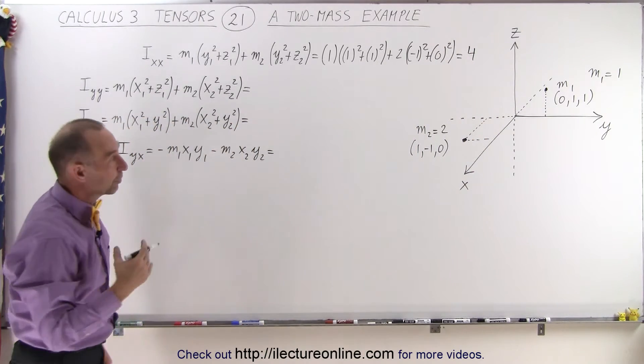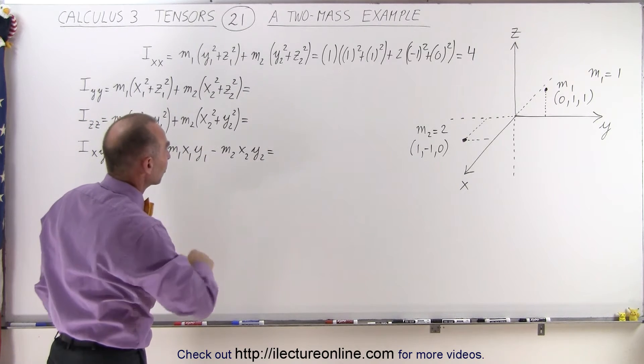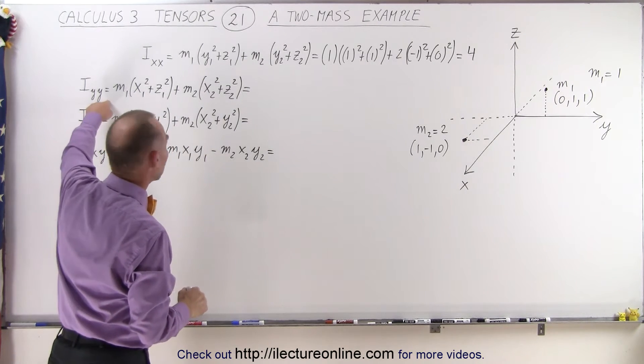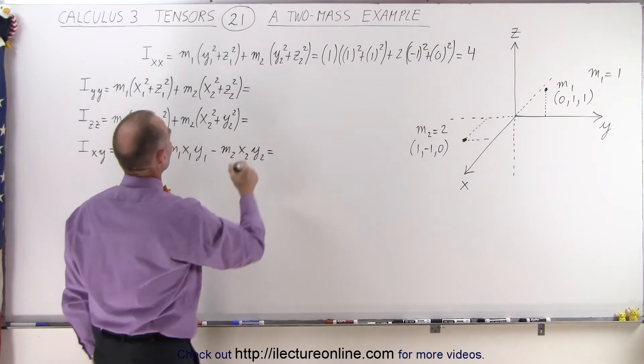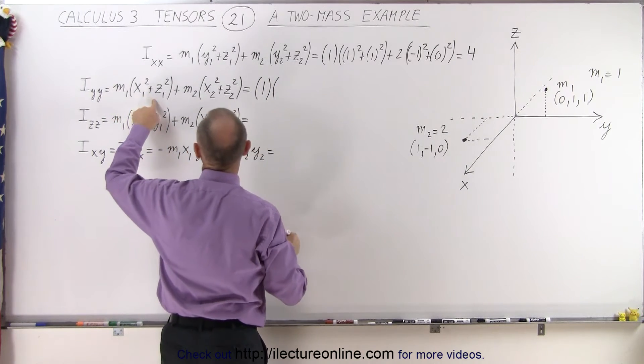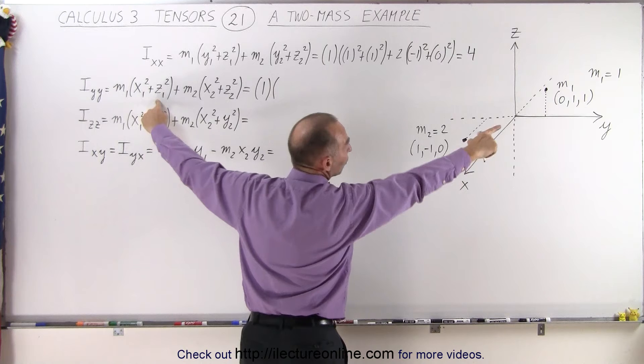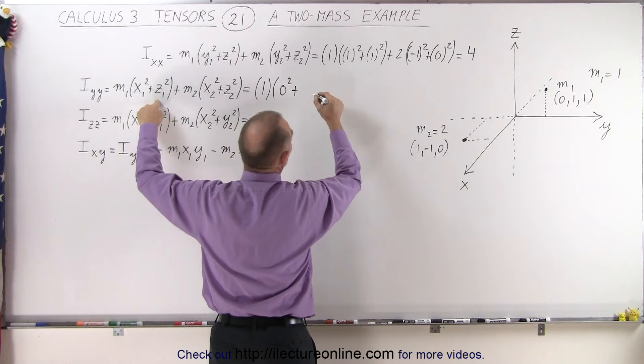Starting with now doing the second element, the middle diagonal element. So that's equal to 1 for m1 times x squared plus z squared. So x squared is 0, so 0 squared plus z squared which is 1.